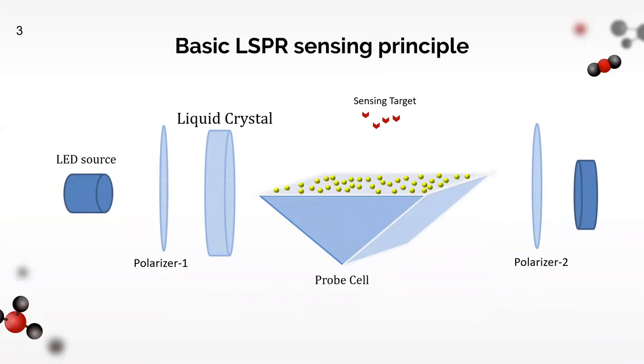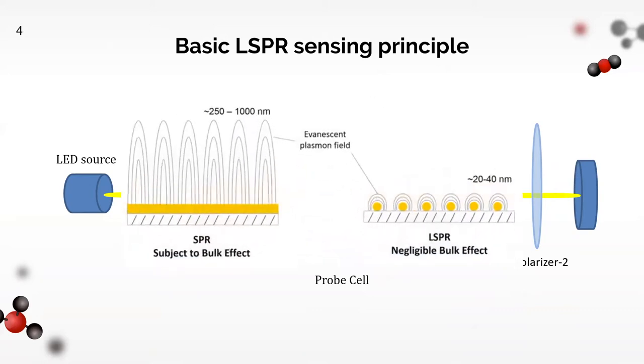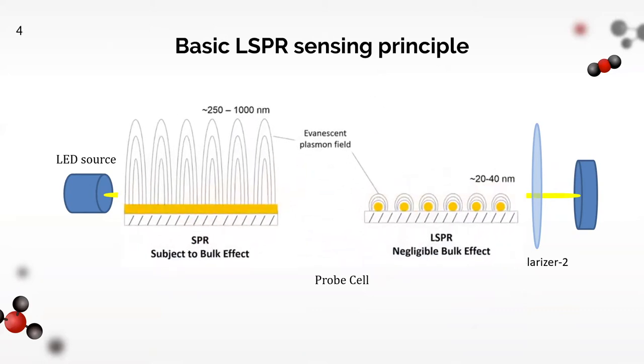For you to understand easier, you can refer to this schematic diagram. We have a light source here, and it passes through the polarizer, liquid crystal, flow cell, second polarizer, and then to the device that records the signal. A surface plasmon, also known as surface plasmon polariton (SPP), is an electromagnetic wave which propagates at a metal-dielectric interface. That's why it is strongly dependent on the geometry of the plasmonic structure and the environmental parameters.